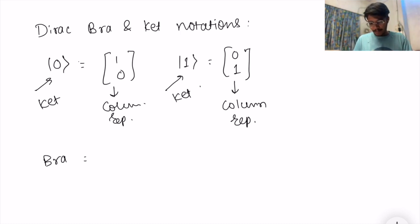So bra notation simply denotes like this, and it is a row representation. So this is two columns and one row vector, and this is two rows one column vector.